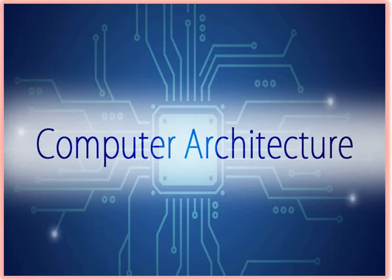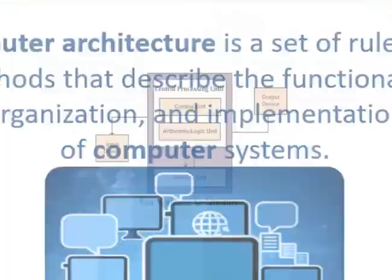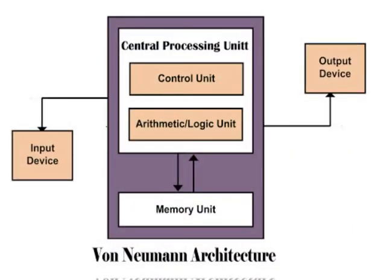What is computer architecture? Computer architecture is a set of rules and methods that describe the functionality, organization, and implementation of a computer system. It tells you about the whole architecture of a computer, whether it's hardware or software — all the hardware components attached with it and all the software running and making use of that hardware.